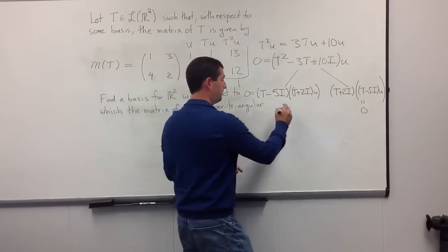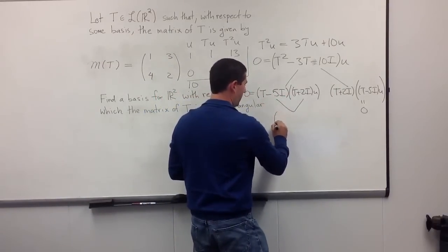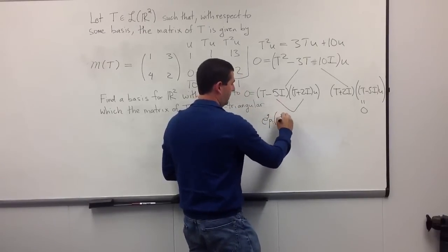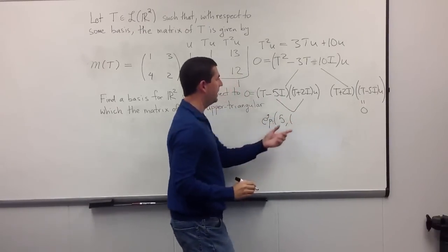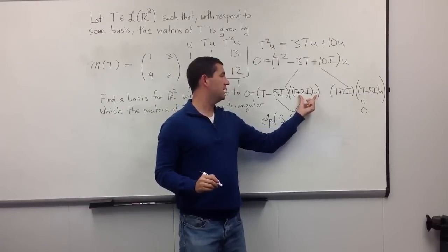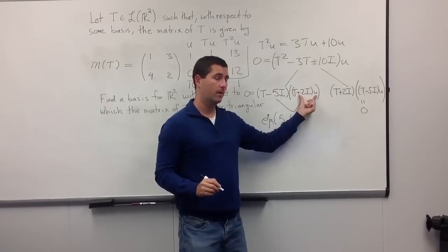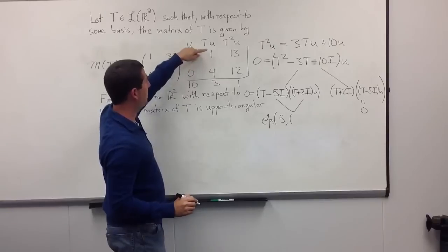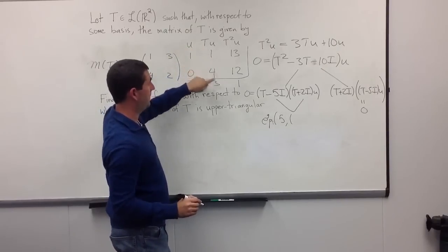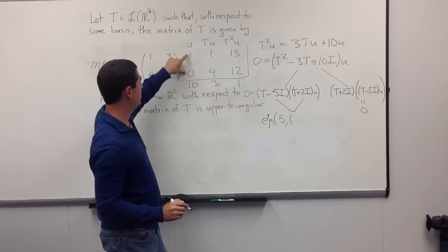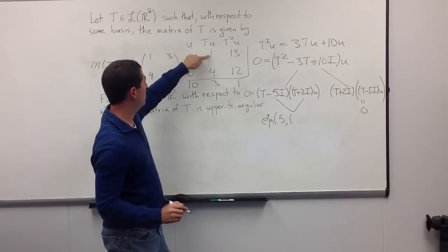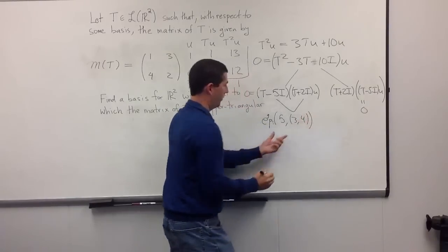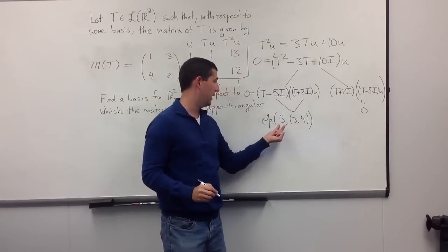This means (T + 2I)(T − 5I)u = 0, so (T − 5I)u lies in the null space of T + 2I — meaning 5 is an eigenvalue. As an eigenpair, the eigenvalue is 5 and the eigenvector is (T + 2I)u. Tu is (1, 4), and if I add 2u = (2, 0) to it, I get (3, 4). So (3, 4) is an eigenvector for the eigenvalue 5.